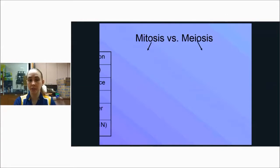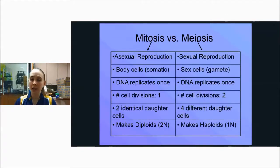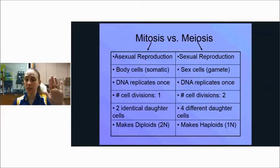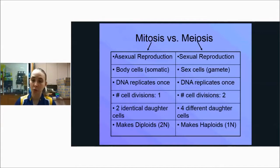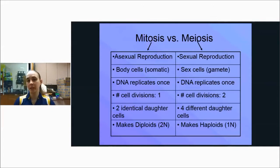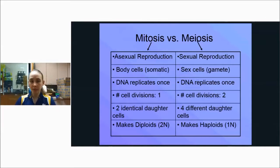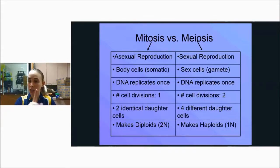Mitosis versus meiosis — a compare and contrast. On your review sheets, you have a Venn diagram. Mitosis is asexual, meaning it's not sexual reproduction, whereas meiosis is considered sexual reproduction. Mitosis happens with body cells — somatic cells — whereas meiosis happens with sex cells, the gametes: sperm and egg. They both share the fact that they replicate the DNA only once, going through one interphase, one S phase, where DNA is replicated just once.